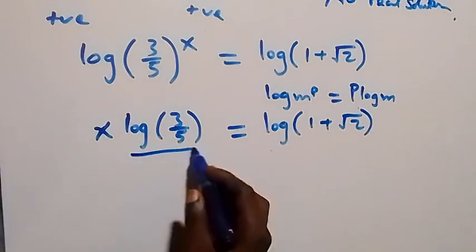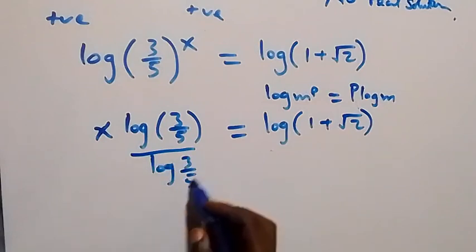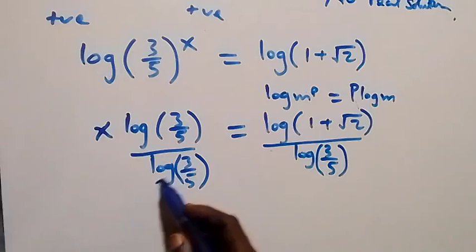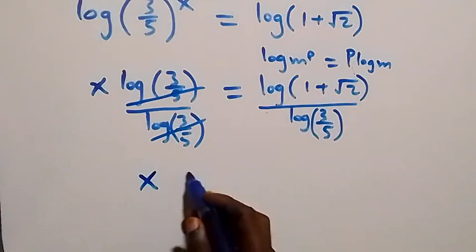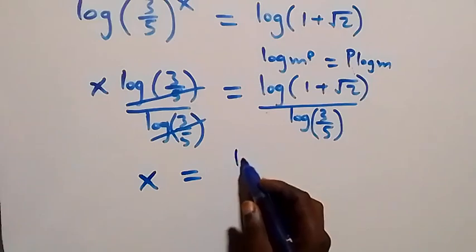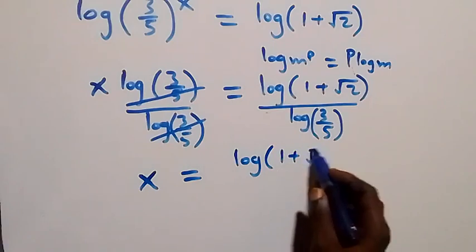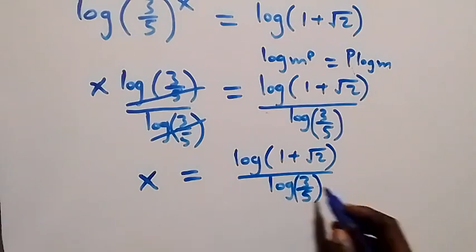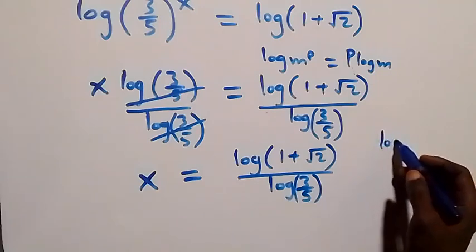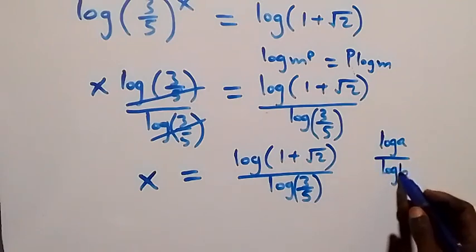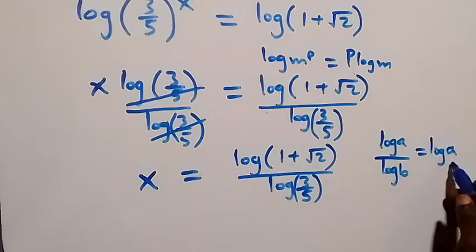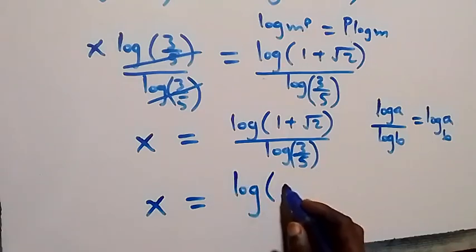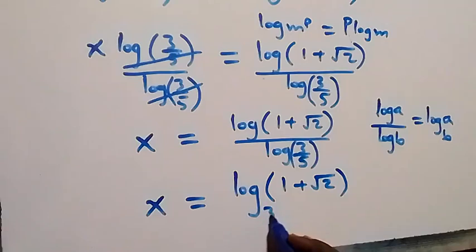We divide both sides by log(3/5). The log(3/5) terms cancel on the left, and we have x equals log(1 plus root 2) over log(3/5). Using the change of base rule — log a over log b equals log a to base b — this becomes x equals log(1 plus root 2) to base (3/5).